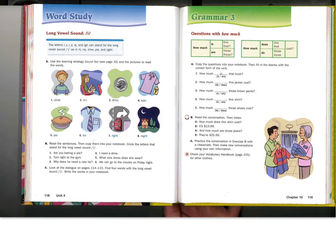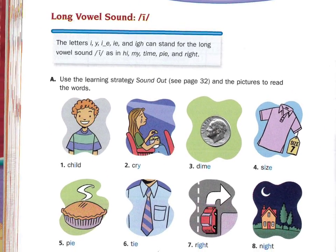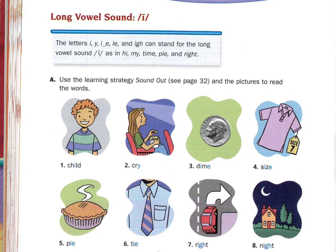Word Study: Long I. The letters I, Y, I blank E, IE, and IGH can stand for the long vowel sound I, as in hi, my, time, pie, and right.